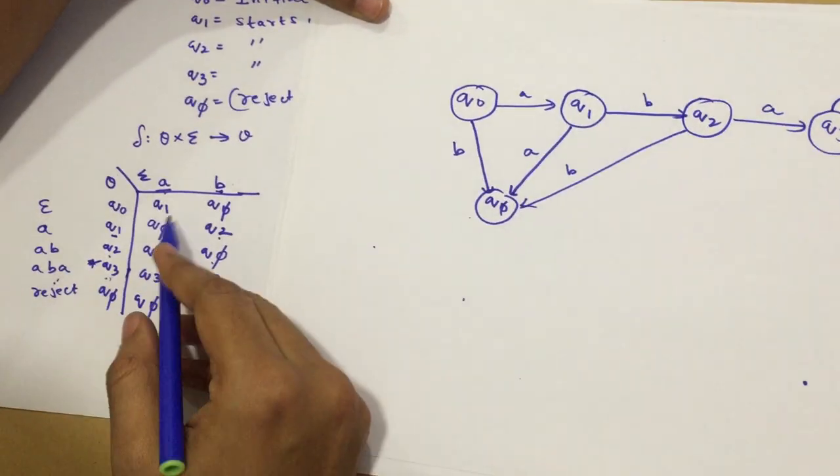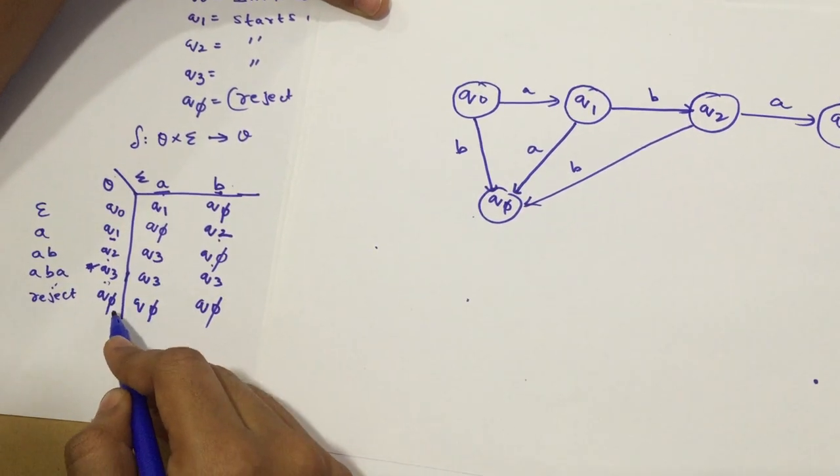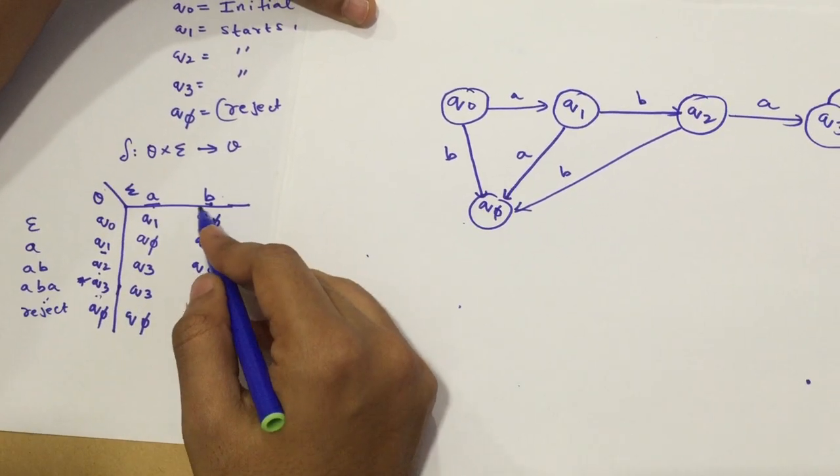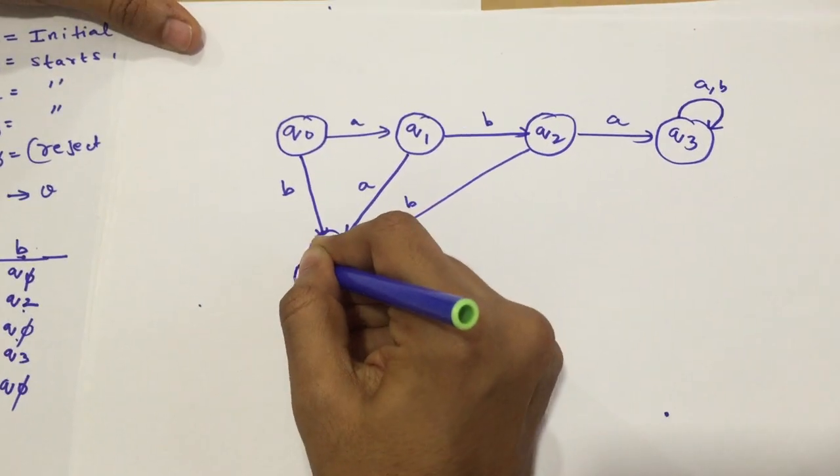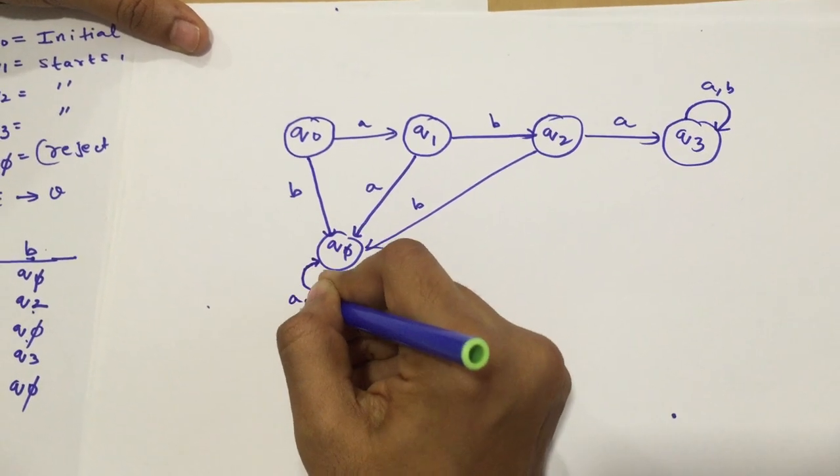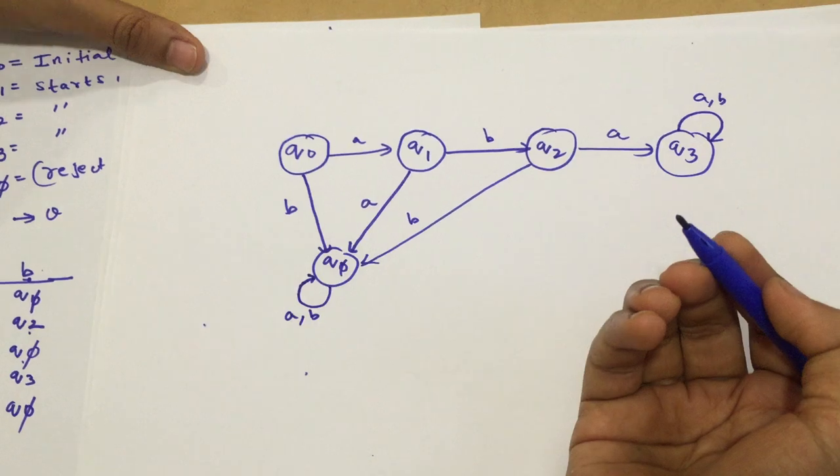And on Q5, when I put A, it remains in my reject state. And when on Q5, I put B, it also remains in my reject state. So, I'm going to draw A, B here. And here you have the DFA, guys.